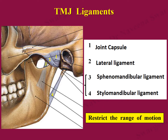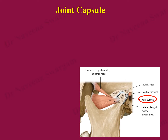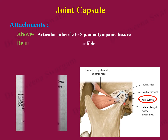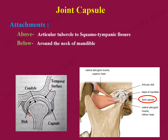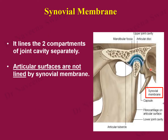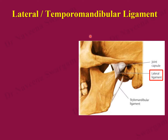The joint capsule: above, it is attached to the articular tubercle of the temporal bone in front, and behind it extends into the squamotympanic fissure. Below, it is attached around the neck of the mandible. Its anterior surface receives the insertion of the lateral pterygoid muscle, and its inner surface gives attachment to the articular disc.